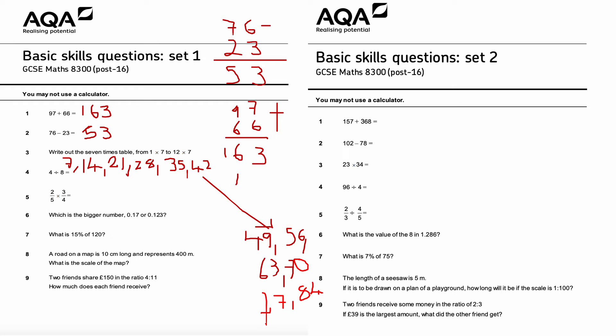Question number four: 4 divided by 8. That's 0.5, because that's the same as doing 1 divided by 2. Think of it as 40 divided by 8 is 5, therefore the answer is 10 times smaller, so it's 0.5.